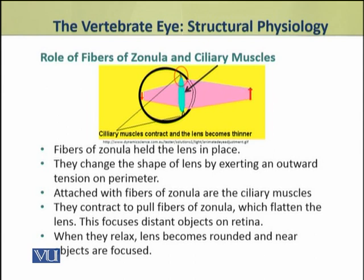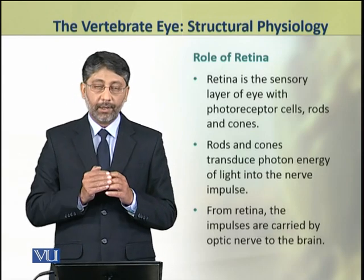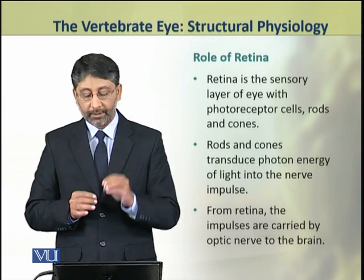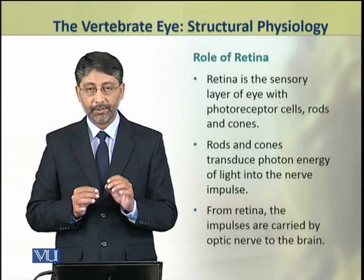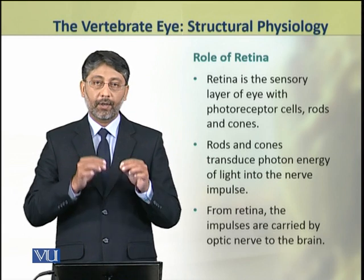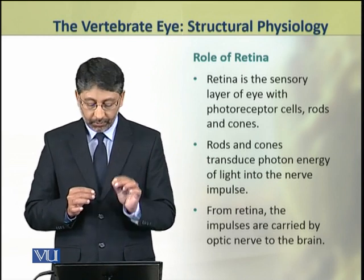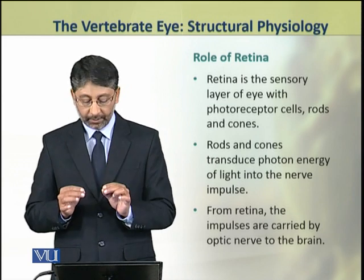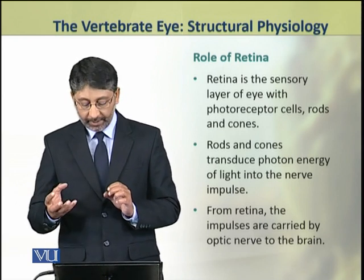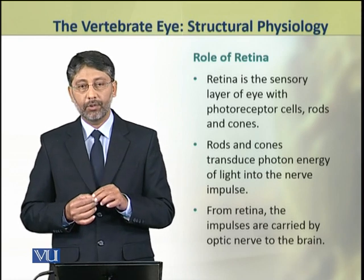However, when the ciliary muscles relax, the lens becomes rounded, and as a result near objects are focused. Now we shall discuss the role of the retina. The retina is the sensory layer of the eye which has photoreceptor cells known as rods and cones. The rods and cones are the cells which transduce photons of light into nerve impulses. From the retina, the impulses are carried by the optic nerve to the brain.